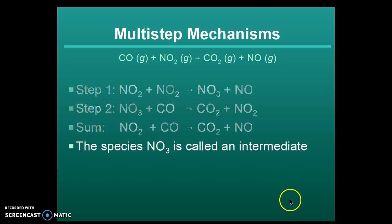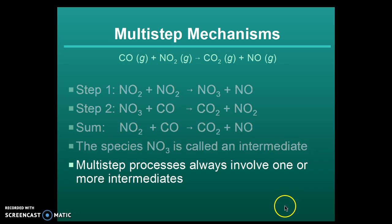The species NO3 is called an intermediate, a high energy intermediate. Multi-step processes always involve one or more intermediate compounds.